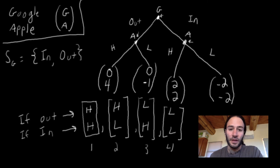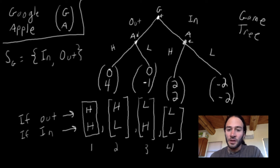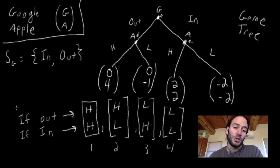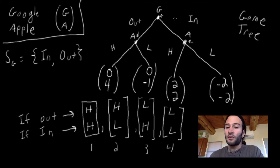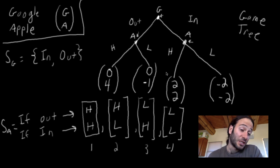This is the full definition of the game. The game tree gives the sequence of moves — Google first, then Apple — and lists the actions, which are not the same as the strategies. Apple's action is either to charge a high or low price, but its strategy is this kind of if-then statement. So the game tree gives the order of moves, the actions, and the payoffs. We'll call this SA — the strategy space for Apple.